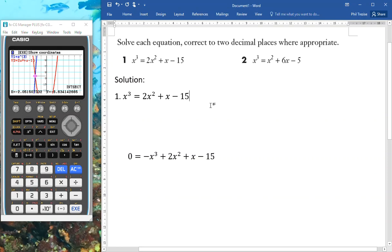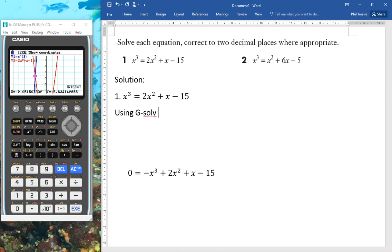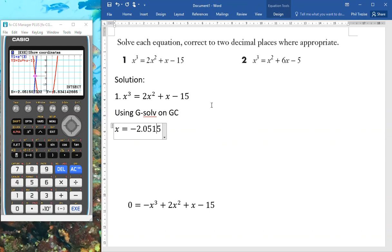I can literally say here, using gsolve on the graphic calculator, and what's my solution? It is going to be x equals negative 2.0515. That's enough. And that's done. Isn't that nice?